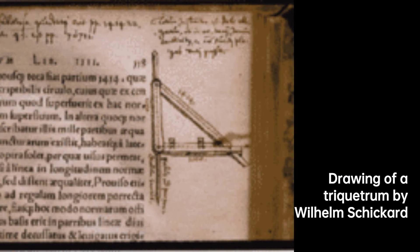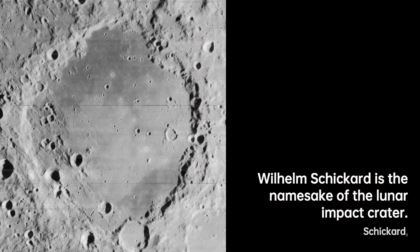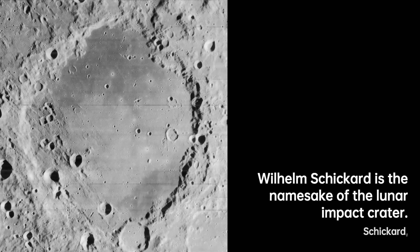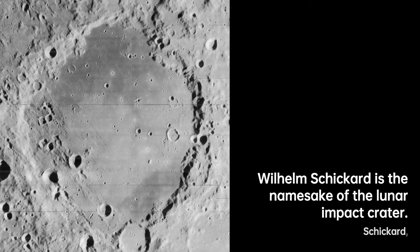Although there is debate about the true impact of Schickert's work on the subsequent development of calculators, it is undeniable that his groundbreaking combination of Napier's rods and an adding machine paved the way for future inventions. Later devices, such as Moreland's multiplying and adding instruments, Casper Schott's systula, René Grillet's machine arithmetique, and Claude Perrault's Rabdelogique, followed the path first pioneered by Schickert.